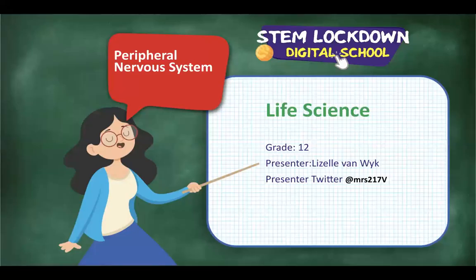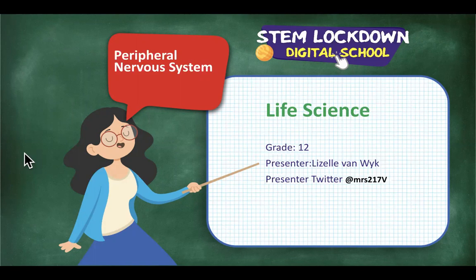Briefly, the central nervous system that we did yesterday — we are not going to go into any detail. We will only look at the structure of the central nervous system and the functions, and then we'll also look at the spinal cord, and then we'll start learning a little bit more about the peripheral nervous system. Please send me a chat message if I'm going too fast or if there's any extra work you'd like to see or answer.